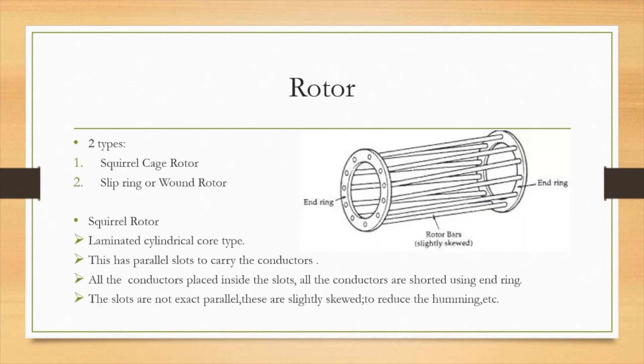Next we will discuss about the rotor. There are mainly two types of rotor: first one is squirrel cage rotor, and second one is slip ring or wound rotor. You can see the squirrel cage rotor in the diagram.